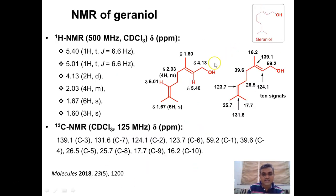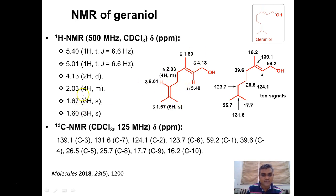Now the last topic is the NMR data of the geraniol molecule. If we record the 1H NMR of geraniol, nine signals are expected, but only six signals are observed because two of the methyl groups appear under almost the same chemical environment and overlap. These two methyl groups are different but are not separable and appear at 1.67 ppm.